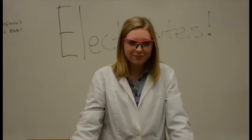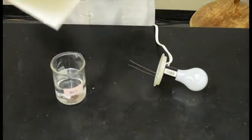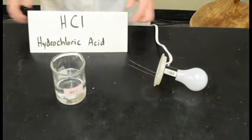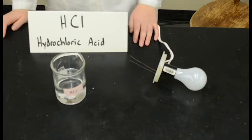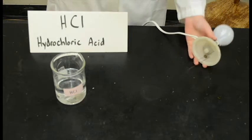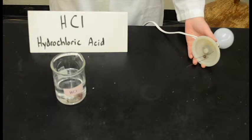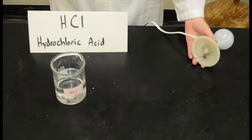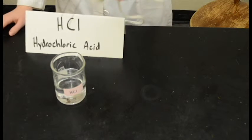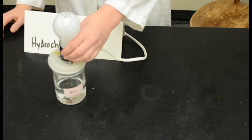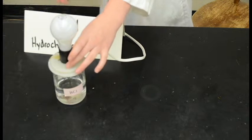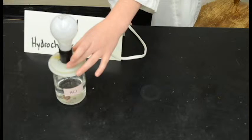Here's a demonstration. One of the most common strong acids used is HCl, or hydrochloric acid. So we can test how well the ions, or how many ions, are in solution by simply putting a light bulb in and running an electric current through it.